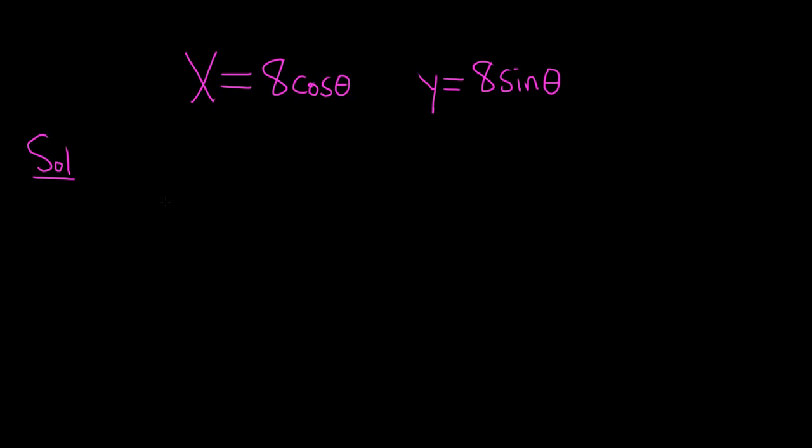So first, let's start off by writing them in rectangular form. Whenever you have trig functions like this, the trick is to solve for the trig function. So we'll start by dividing by 8 here. So we get cosine of theta equals x over 8. Over here, we do the same thing. To solve for sine, we simply divide by 8, and that gives us sine of theta equals y over 8.